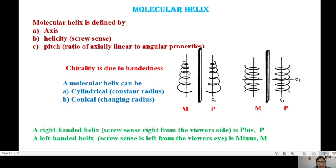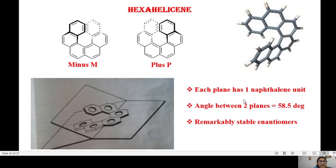When you move in an anticlockwise manner, you have M helix, and when you move in a clockwise manner, you have P helix. That is how you have this as M helix and this as P helix. P is denoting plus and M is denoting minus. So a right-handed helix is plus and a left-handed helix is minus.